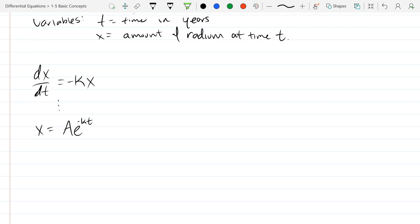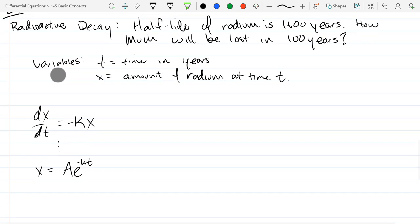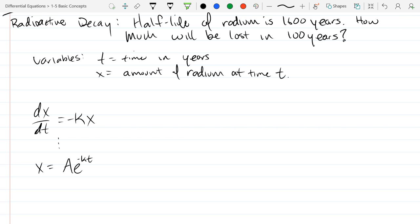But now we have to figure out what is a and what is k. We actually might not be able to figure out what a is. That's okay. So half-life of radium is 1,600 years. That's actually an initial condition in disguise. It's a little bit tricky. They don't actually tell us how much we started with or how much is left after 1,600 years. But what I can say is whatever I started with, I got half of that in 1,600 years.